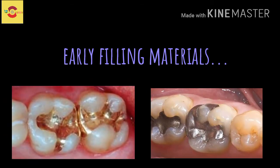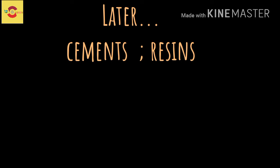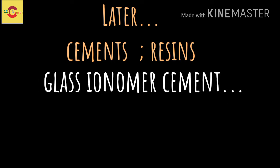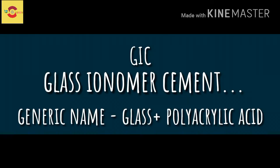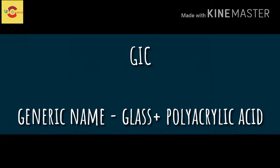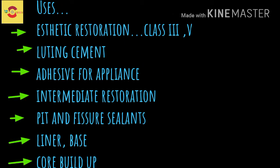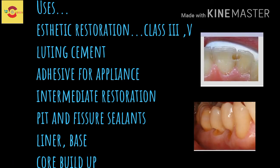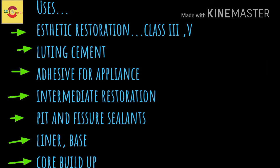The filling or restorative materials for simple dental caries were earlier basically metals or alloys of those metals. Later, more aesthetic materials such as cements and resins evolved, glass ionomer cement being one among them. GIC is the generic name for materials based on the reaction of glass powder and polyacrylic acid. GICs have been used for many purposes including aesthetic restoration of anterior teeth, for example class 3 and 5 sites, as luting cements, and as adhesives for orthodontic appliances.